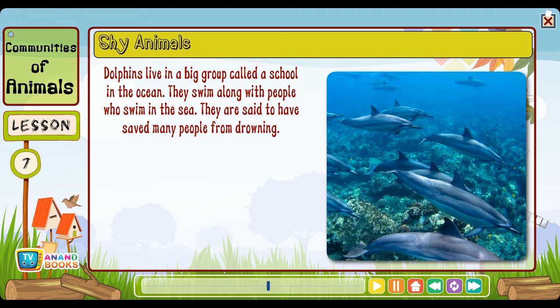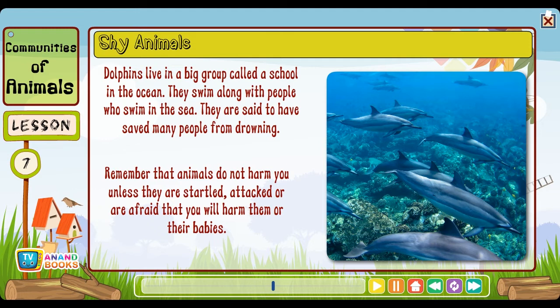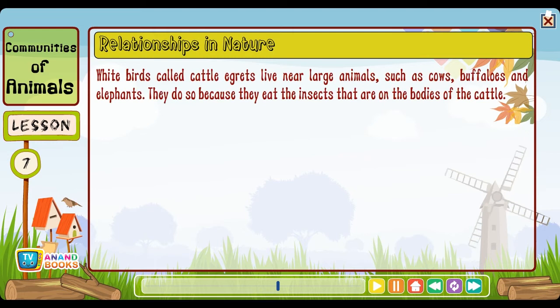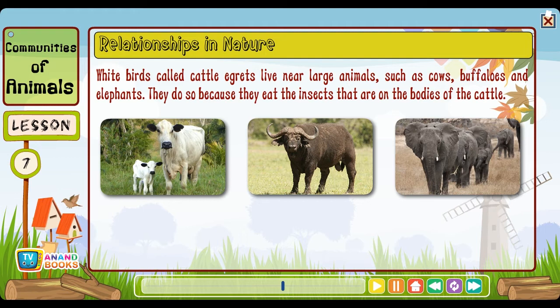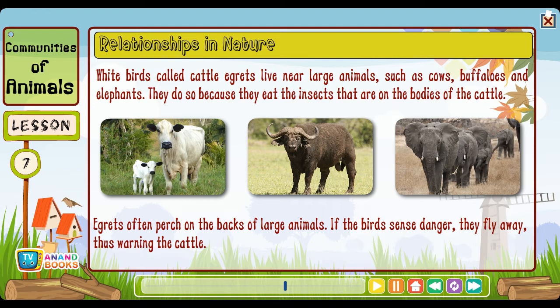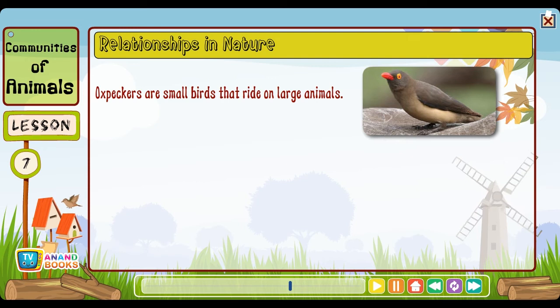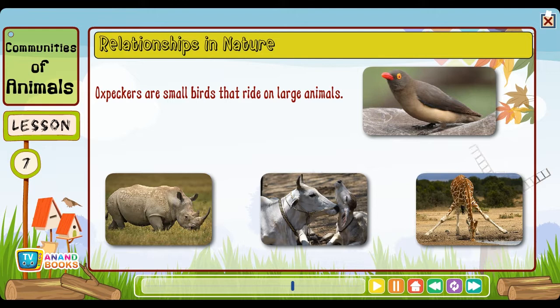Most friendly animals have been tamed by human beings as pets or domestic animals. Dolphins live in a big group called a school in the ocean — they swim along with people and are said to have saved many people from drowning. Remember that animals do not harm you unless they are startled, attacked or afraid that you will harm them or their babies. Relationships in nature: White birds called cattle egrets live near large animals such as cows, buffaloes and elephants — they eat the insects on the bodies of the cattle. Egrets often perch on the backs of large animals, and if they sense danger they fly away, thus warning the cattle.